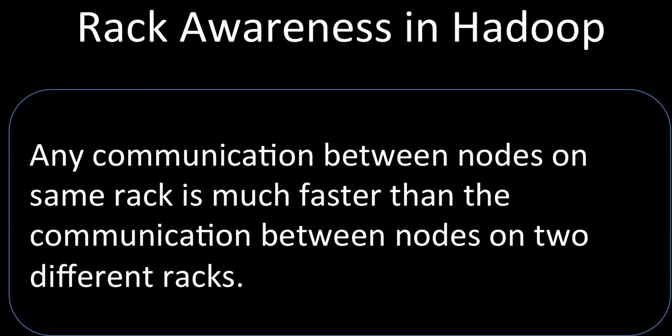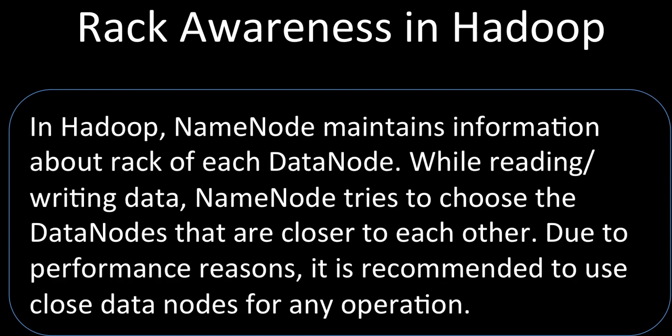For example, any communication between nodes that are on the same rack is much faster than communication between nodes on two different racks. It's quite common sense: if we have two servers in the same rack they can communicate very fast because they are connected to each other and nothing goes through the outside network. Whereas if the node is on a different rack, communication takes a little more time because it has to go through the network.